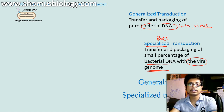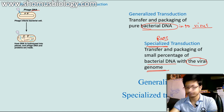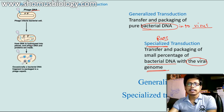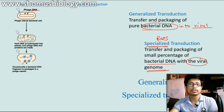Once the phage infects this bacteria, it is injecting its own genetic content inside — in this case, it is a DNA. After that, this phage DNA will start breaking down the bacterial genomic content. So now we have everything fragmented inside the target bacteria. After this fragmentation is done and phage particles start to replicate and produce more of their own DNA content inside the host bacteria, it is then time for packaging.